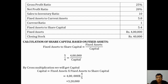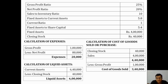We have now solved all the ratios: gross profit from the gross profit ratio, net profit from the net profit ratio, sales from the sales to inventory ratio, current assets from the fixed assets to current assets ratio, current liabilities from the current ratio, and share capital from the fixed assets to share capital ratio. Apart from these, we still need to calculate expenses and cost of goods sold for the trading and profit and loss account.